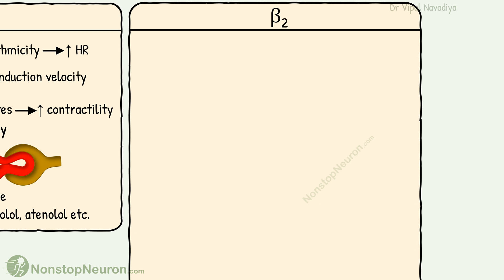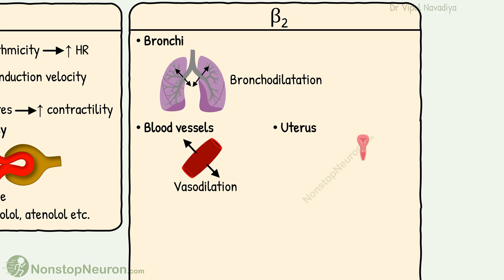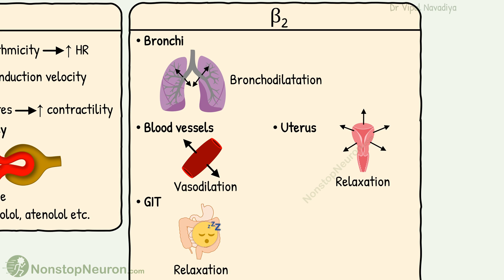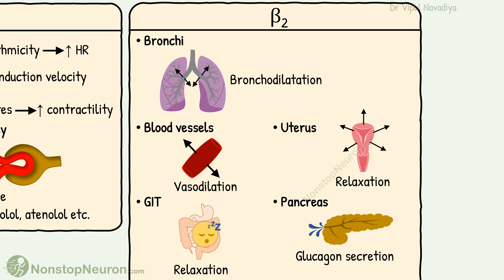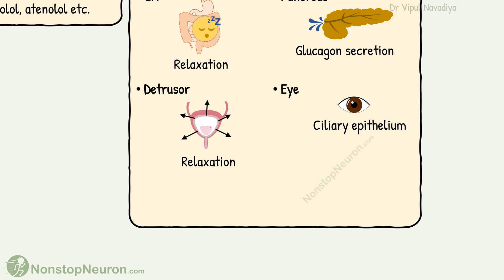Now, beta-2 receptors. They are found in the smooth muscles of many organs and cause relaxation. In bronchial smooth muscles, they cause bronchodilation. In blood vessels, they cause vasodilation. In the uterus, they cause relaxation. In the GIT, they cause relaxation. In the pancreas, they cause glucagon secretion. In detrusor muscles, they cause relaxation. And finally, beta-2 receptors in the ciliary epithelium increase aqueous secretion.